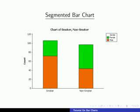For the non-smoker bar, it goes up to 97, which is the total number of non-smokers recorded. It's split into males and females where the orange represents the 44 males and the green represents the 53 females.